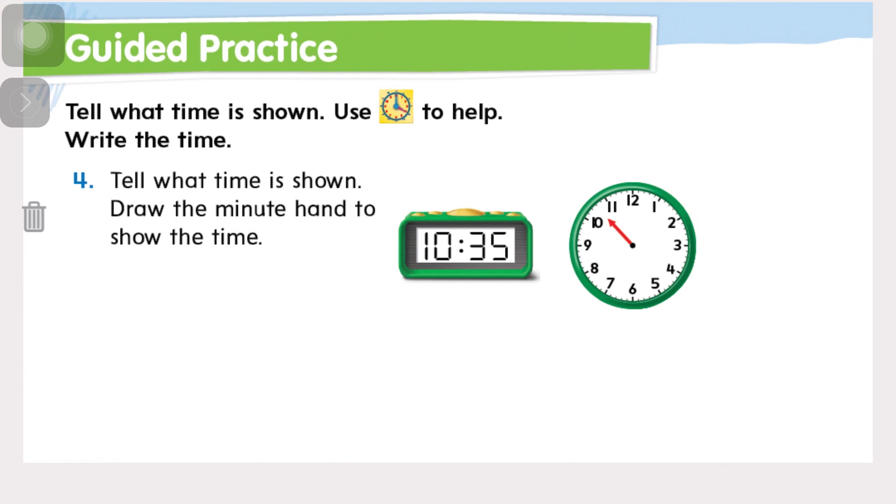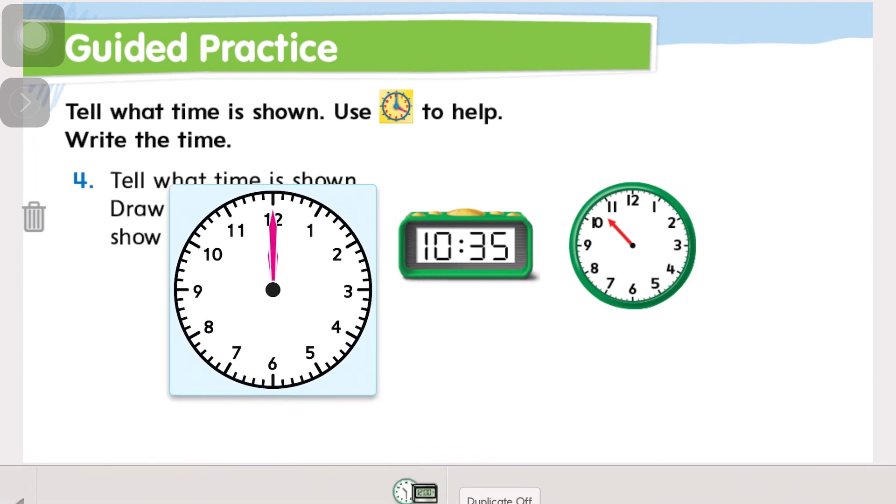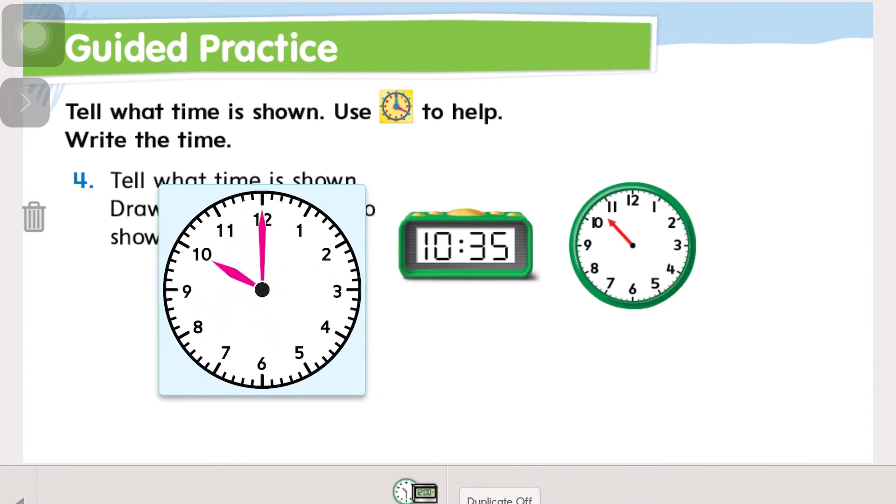Tell what time is shown. Use a clock to help write the time. So we're going to draw the minute hand to show the time. We've got 10:35. So I'm going to pull up a clock here and let's make it 10 o'clock. I'm actually going to go backwards here to get there quicker. Here's 10. And now I need to get to 35, so I'm going to move my minute hand and count by fives until I get to 35: 5, 10, 15, 20, 25, 30, 35. So when I get to 10:35, my minute hand is on the 7.